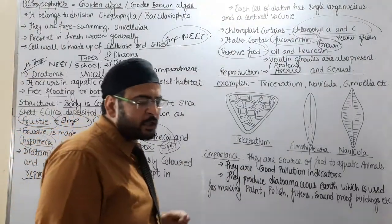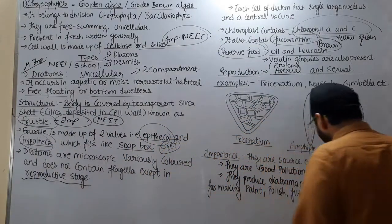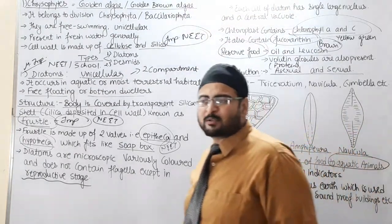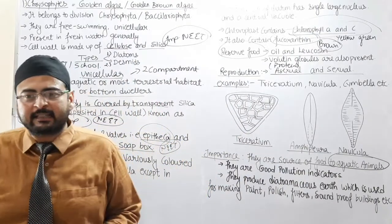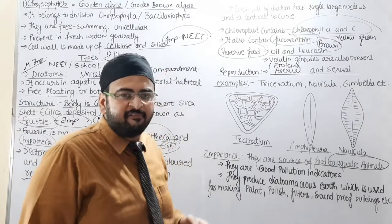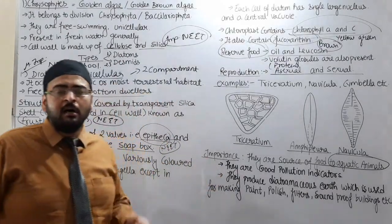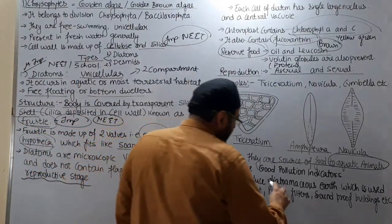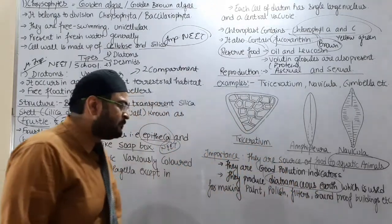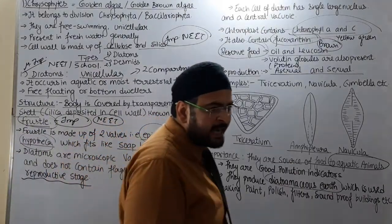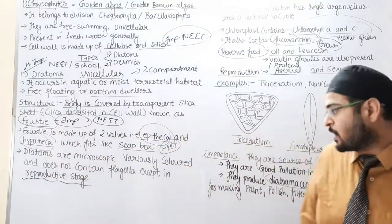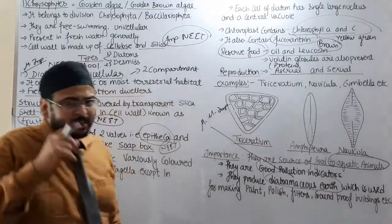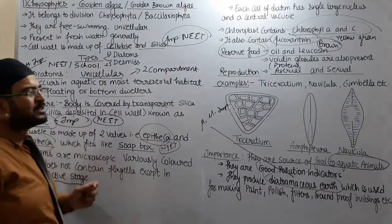Now we are coming to the Economic Importance of Diatoms. Diatoms are a rich source of food for aquatic animals — ये aquatic animals को, fishes को food provide करते हैं, it acts like a food supplement for fishes. It is also a good pollution indicator, and it produces diatomaceous earth which is used for making paint, polish, filters, soundproof buildings, glasses, etc.